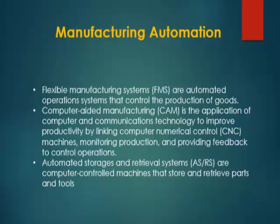Manufacturing automation: Flexible manufacturing systems are automated operations systems that control the production of goods. Computer-aided manufacturing is the application of computer and communications technology to improve productivity by linking computer numerical control machines, monitoring production, and providing feedback to control operations. Automated storage and retrieval systems are computer-controlled machines that store and retrieve parts and tools.